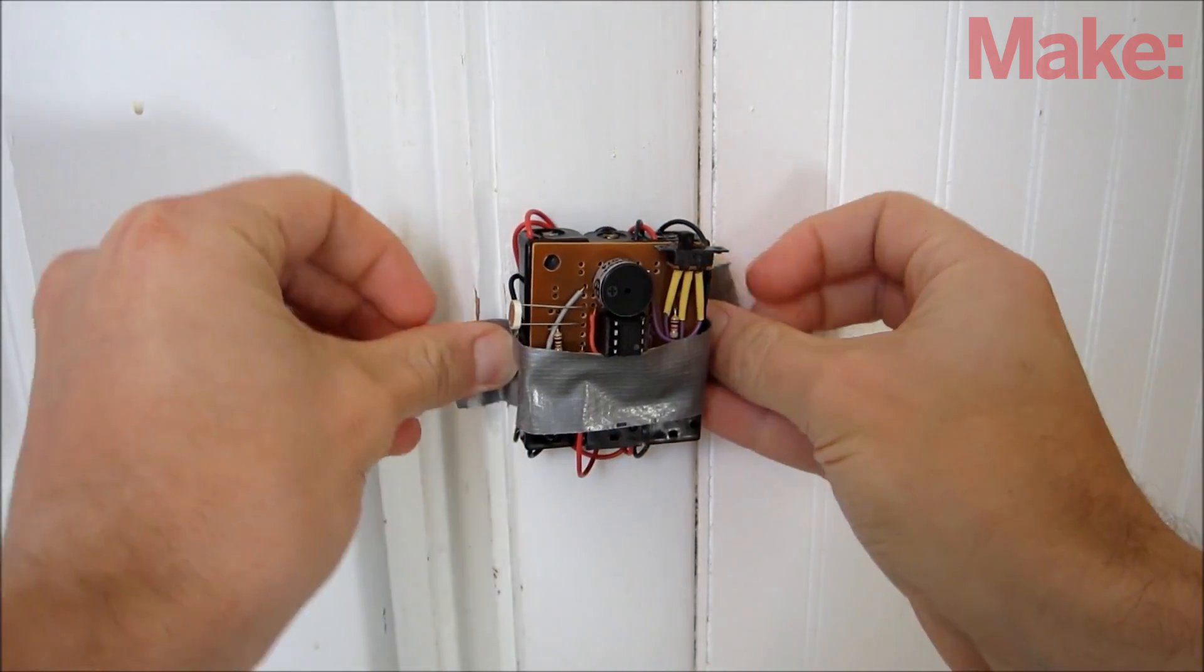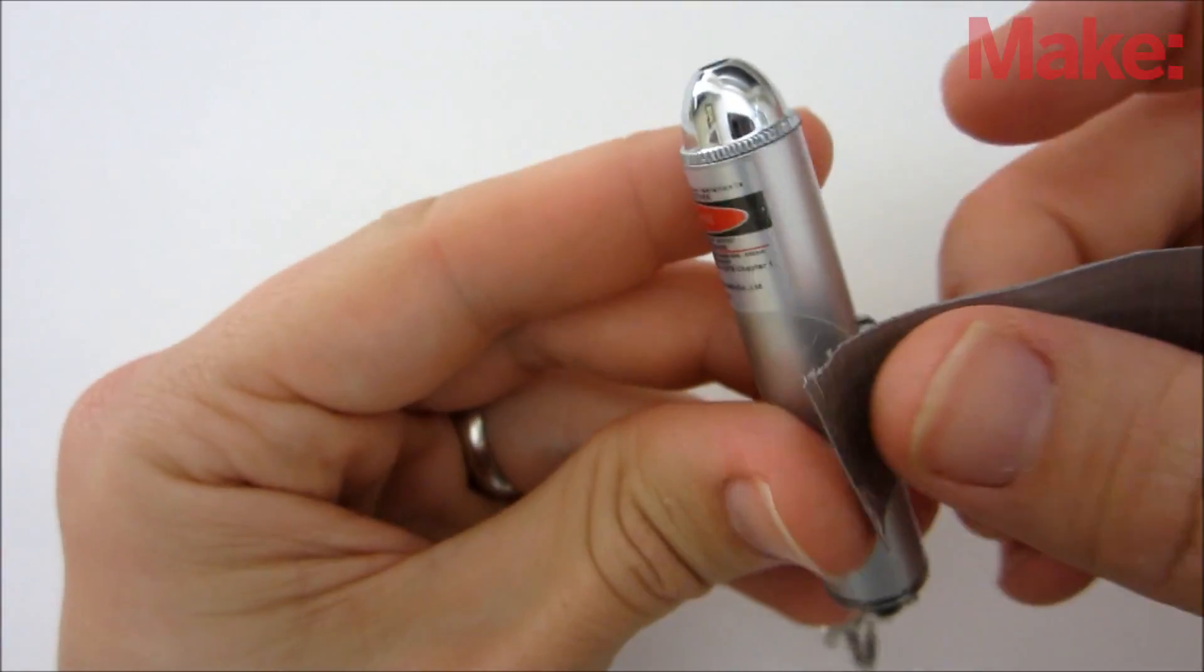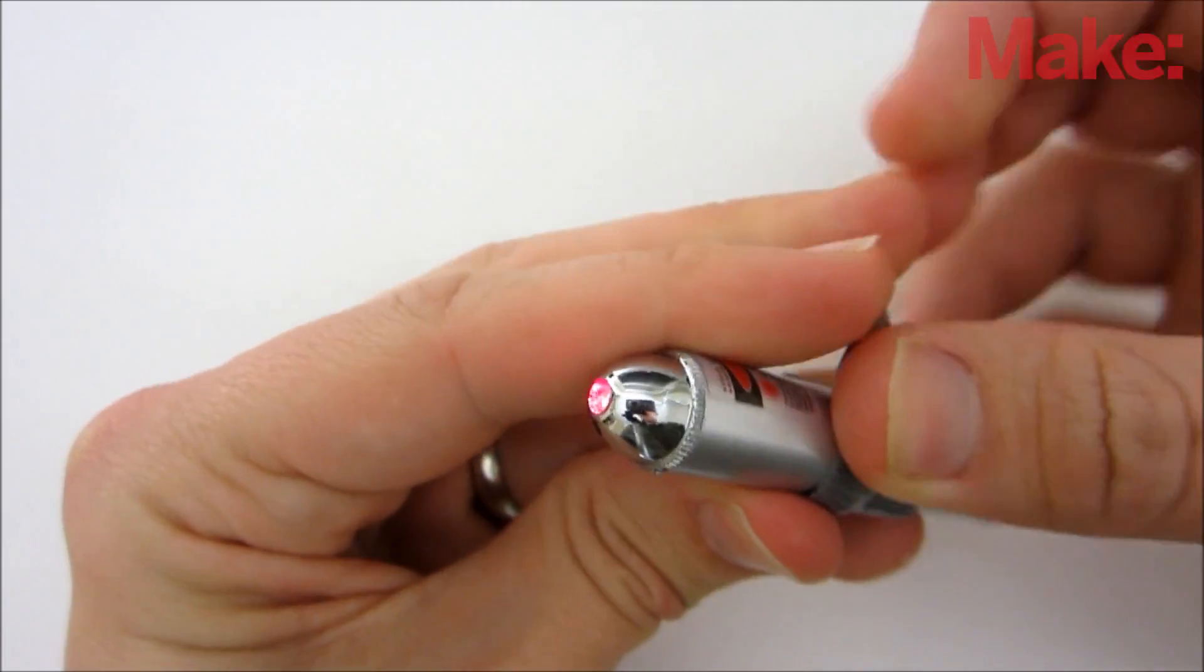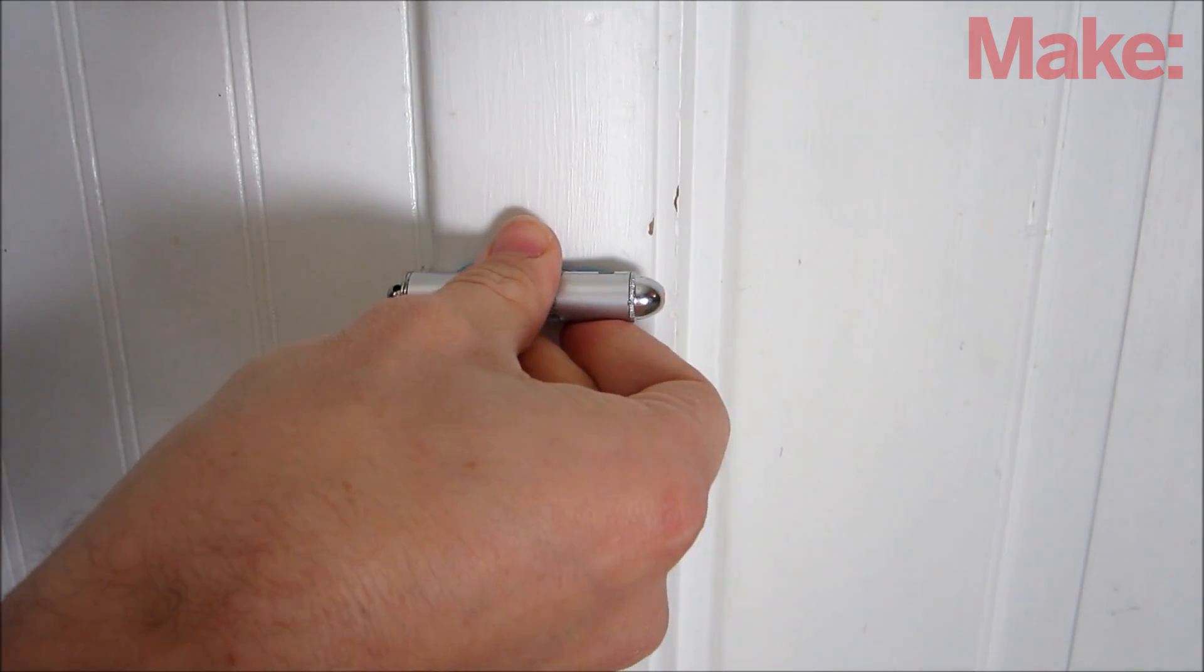First, tape the alarm in place. To keep the laser pointer on, I use tape to hold the button down. Then I use sticky tack to mount the laser pointer in place.